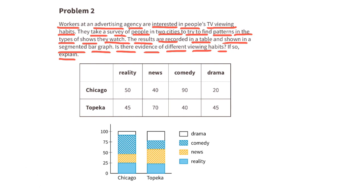Is there evidence of different viewing habits? In the table, Topeka watches much more news than Chicago does, and Topeka also watches a lot more drama than Chicago. Chicago watches a lot more comedy compared to Topeka. The numbers in the reality TV column are about the same, so Topeka and Chicago watch about the same amount of reality TV. Looking at the bar graph, you can see the similarities and differences.